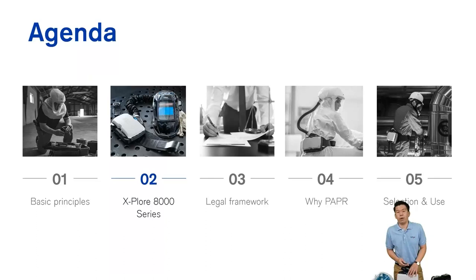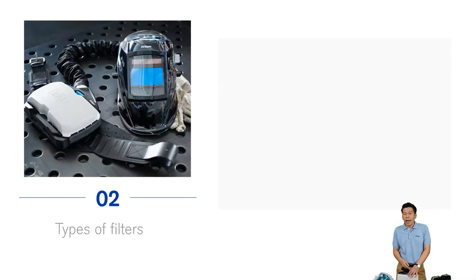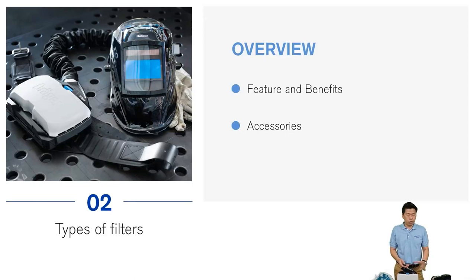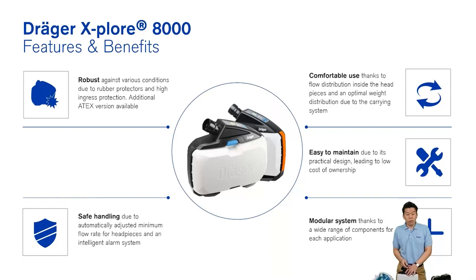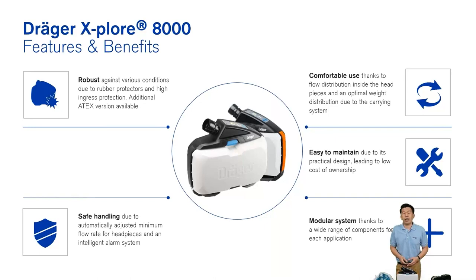Now, what we have here is our Explore 8000. I'll briefly touch on our PAPR and what it offers. This is a very robust PAPR available in two models — the 8500 and the 8700. The difference is that the 8700, which has the orange tab on the side, is explosion proof, so you can use it in ATEX environments. The 8500 is more designed for industrial use that does not require explosion proof.